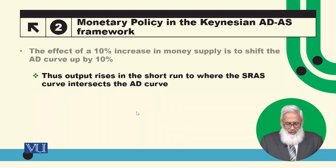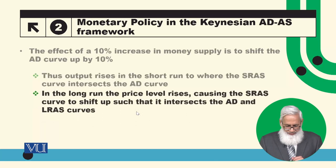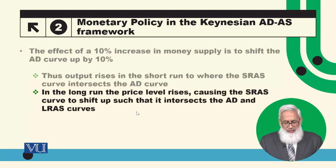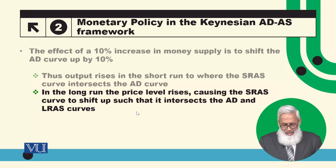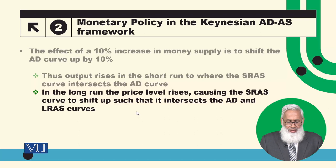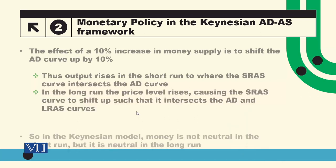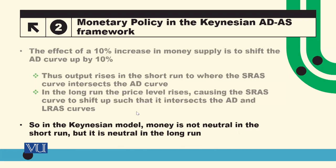Output rises to where the Short-run Aggregate Supply Curve intersects the aggregate demand curve. In the long run, the price level rises. So in the short run, output changes; in the long run, the price level changes. It intersects the aggregate demand and long-run aggregate supply curve. In the Keynesian model, money is not neutral in the short run but it is neutral in the long run.